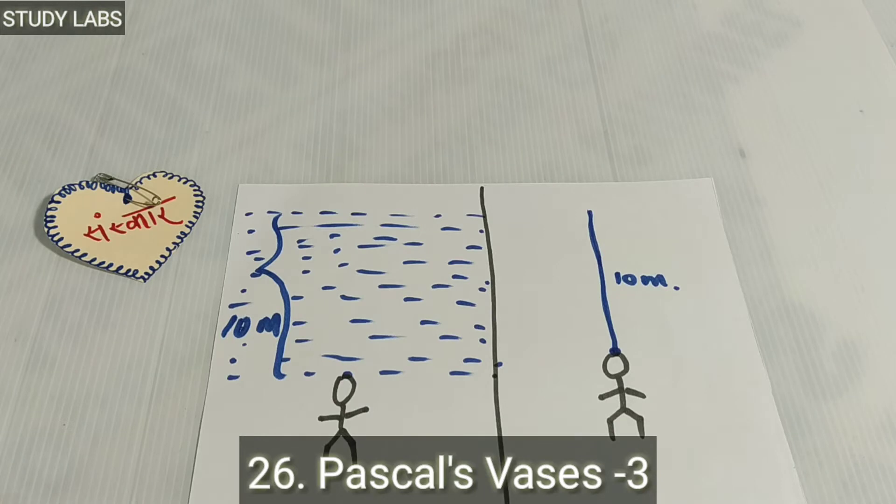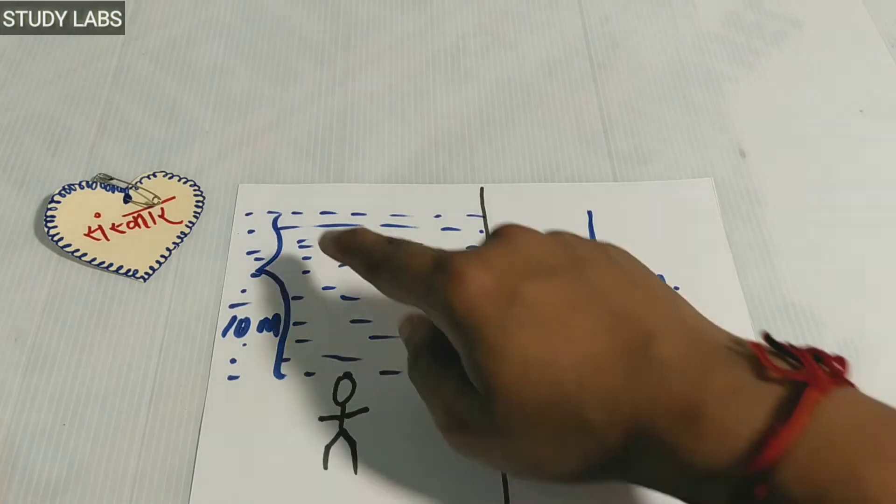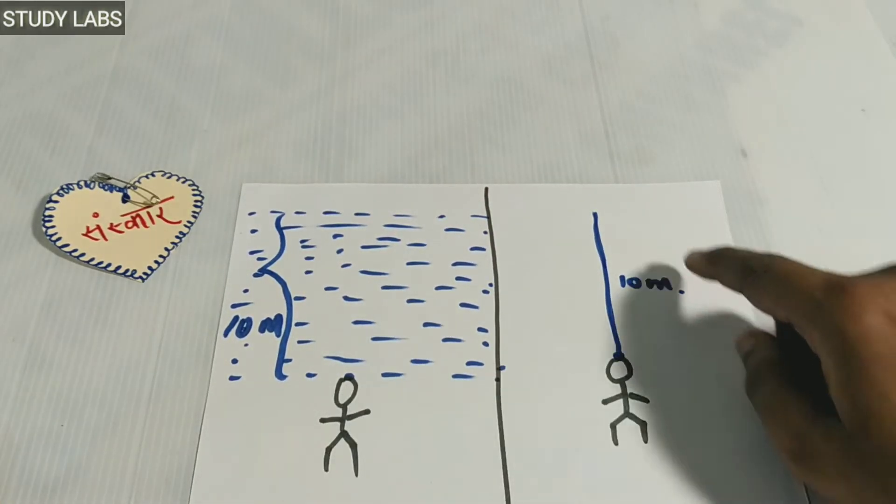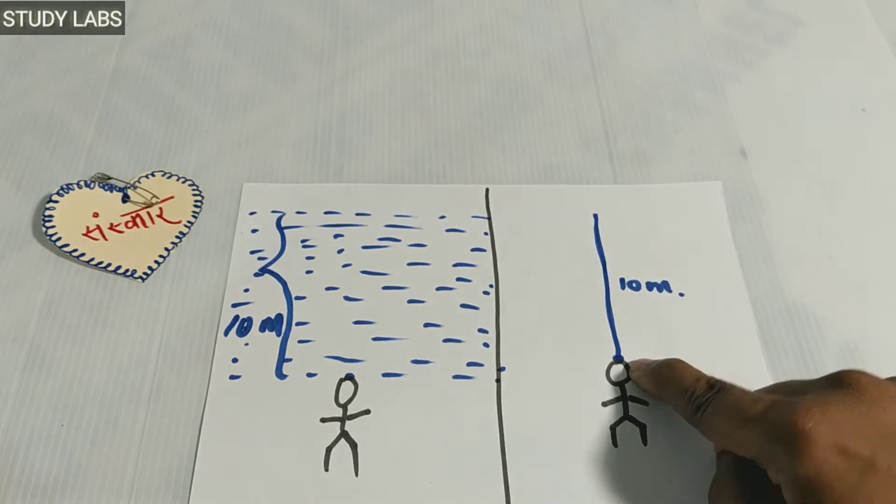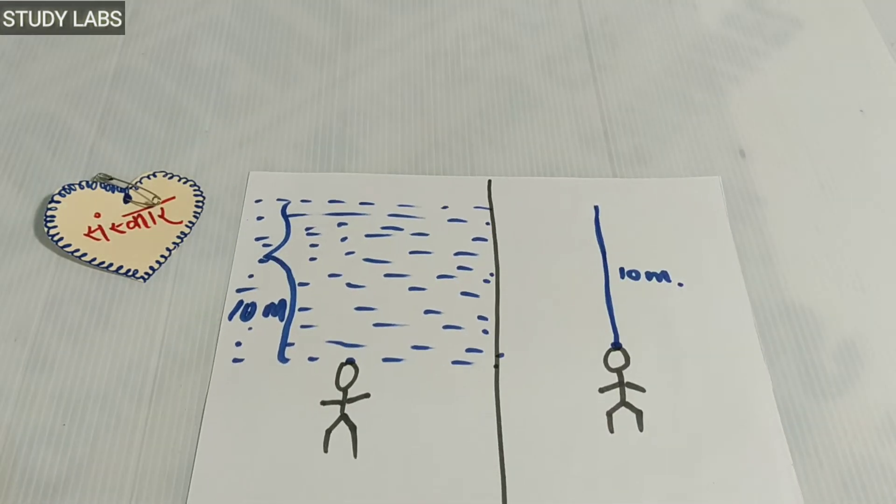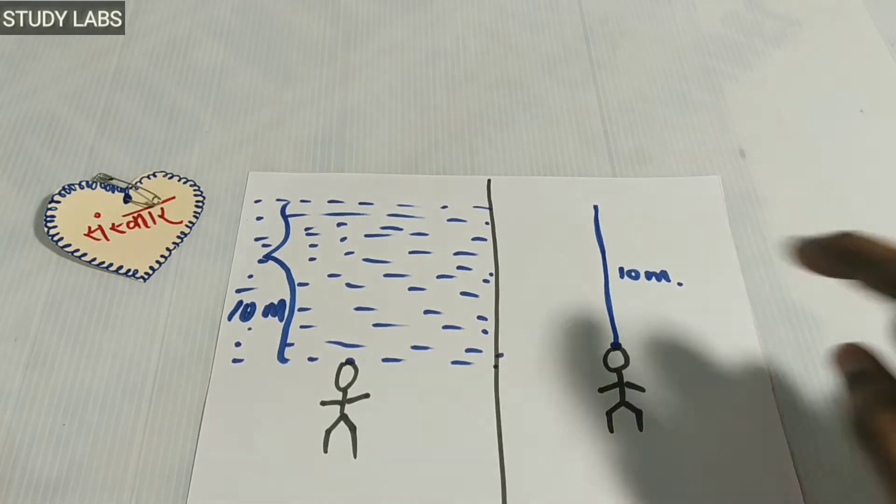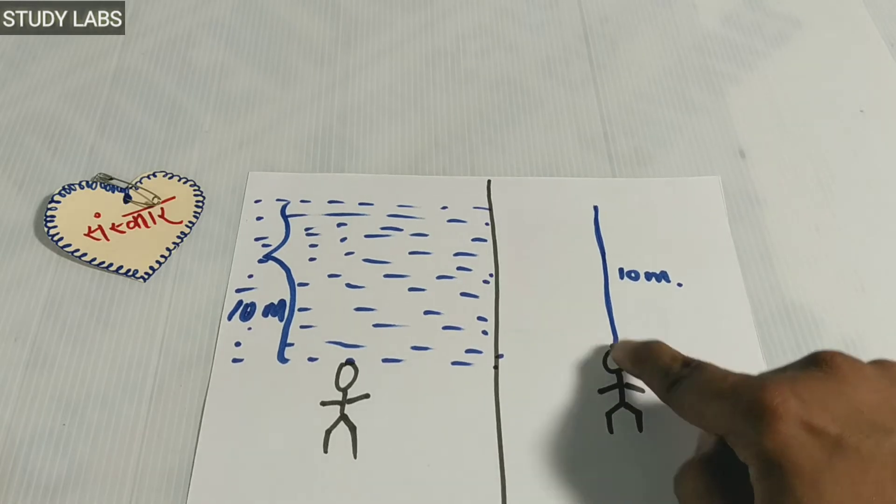Yesterday, I said a statement before the experiment that if you are below 10 meters and you have a straw, a stream of water, in both cases the pressure on you will be exactly the same.